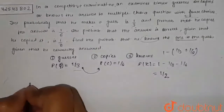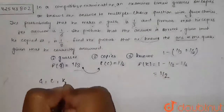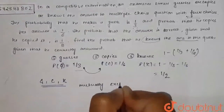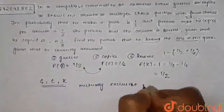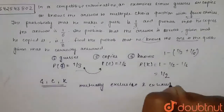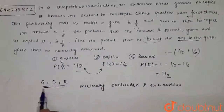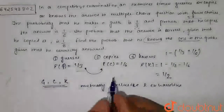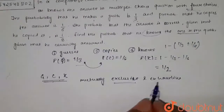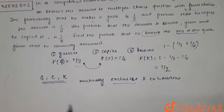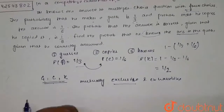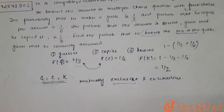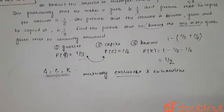Here G, C, and K — these three events are mutually exclusive and exhaustive. Mutually exclusive means these three events cannot occur at the same time. Exhaustive means one of them must occur — either he guesses the answer, copies it, or knows the answer. All three cannot happen simultaneously, but one of the events must occur.